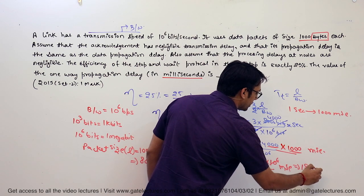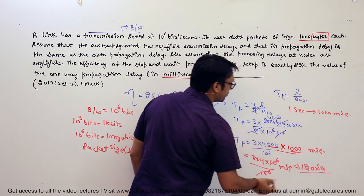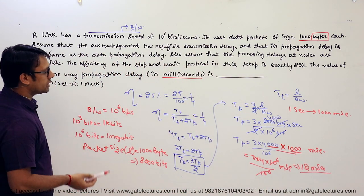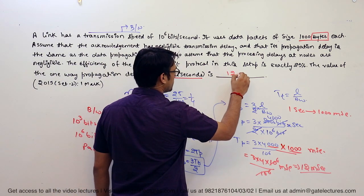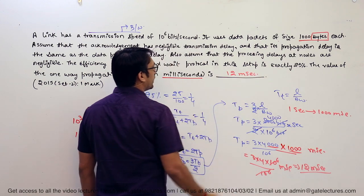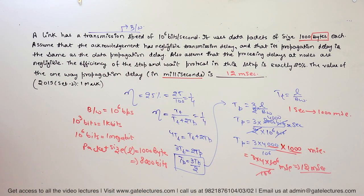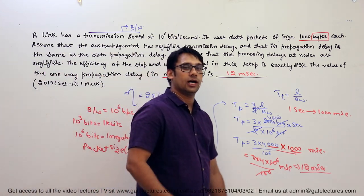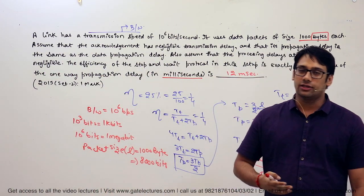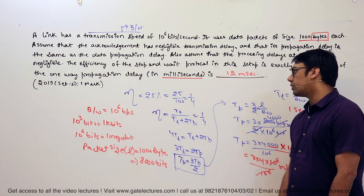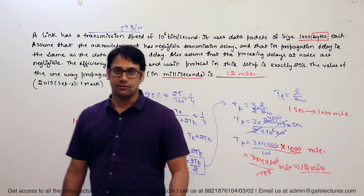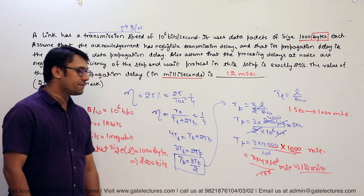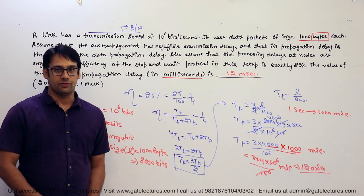So tp = (3 × 4 × 10^6) / 10^6 milliseconds = 12 milliseconds. The correct answer to this problem is 12 milliseconds. Do not make silly unit-conversion mistakes in the examination hall. Now let us go to the next video.